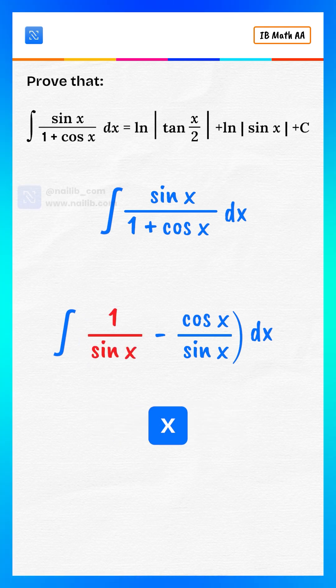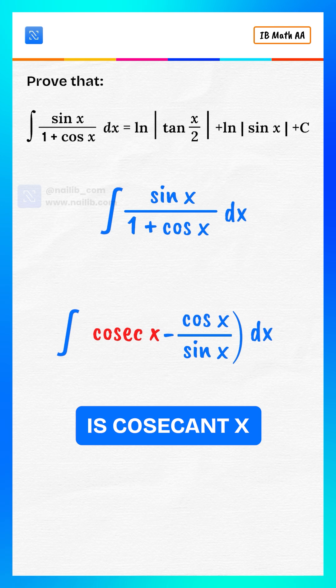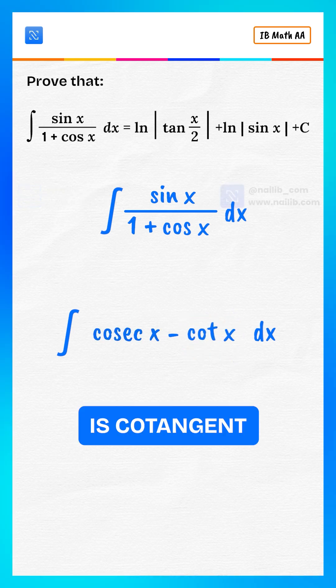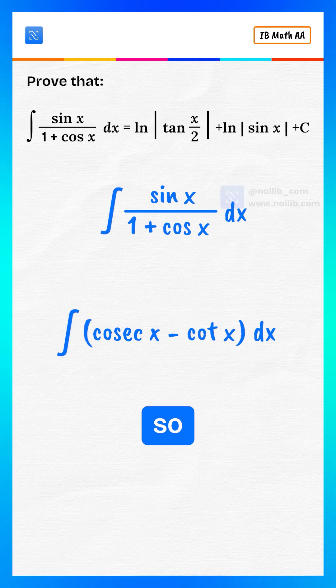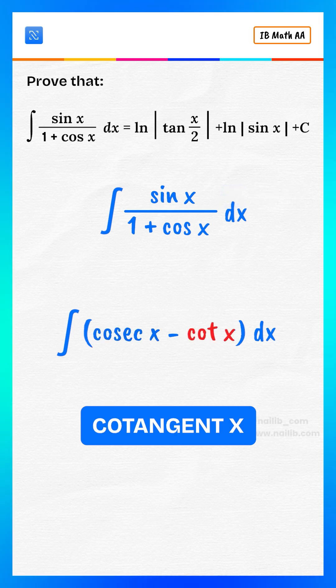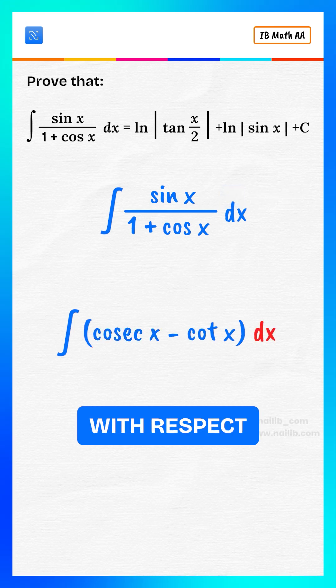1 divided by sine x is cosecant x. Cosine x divided by sine x is cotangent x. So the expression becomes the integral of cosecant x minus cotangent x with respect to x.